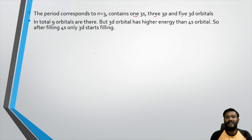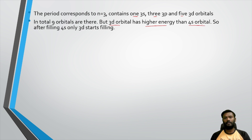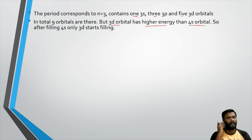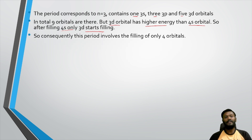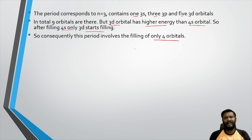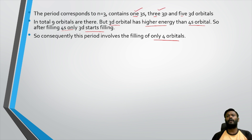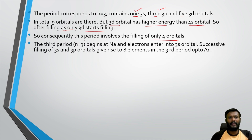However, the 3d orbital has higher energy than the 4s orbital. So energetically, 4s is filled before 3d. Consequently, the third period involves only the 3s and 3p orbitals — 4 orbitals total. The third period begins with sodium and is completed with argon.